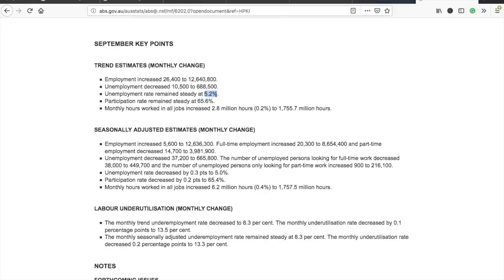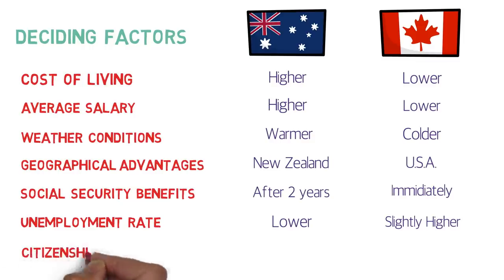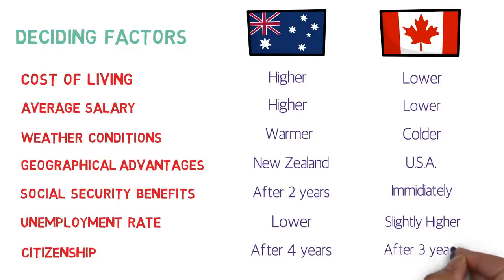Regarding citizenship: as a permanent resident of Australia, you must spend around four years before you can apply for citizenship, while in Canada you only need three years as a permanent resident before applying. Note that this refers to time spent as a permanent resident, not on a work permit or study visa.